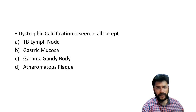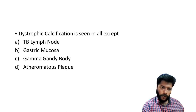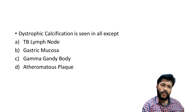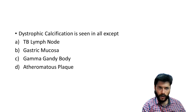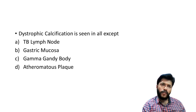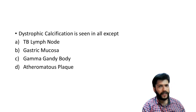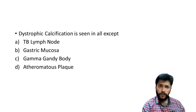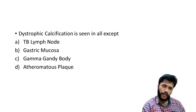Third question: dystrophic calcification is seen in all except. There's this concept of pathological calcification — calcification is deposition of calcium. It can be dystrophic or metastatic. Remember the word D for dystrophic and the word dying: in dead, dying, or damaged tissues you would have dystrophic calcification. Your serum calcium levels are normal, but calcium is being deposited in areas where there is cellular death.